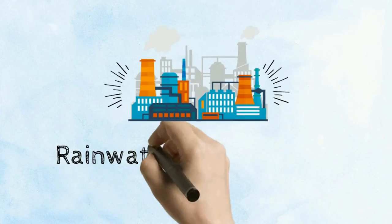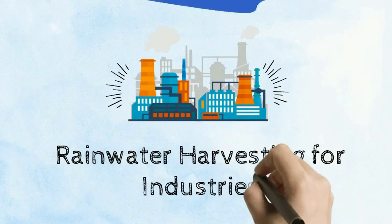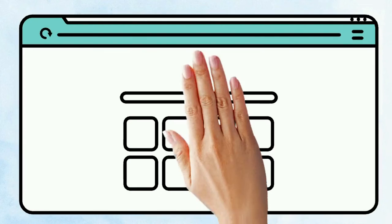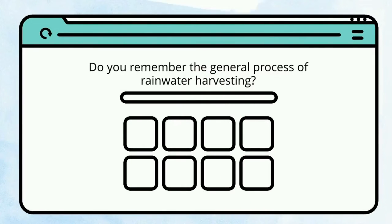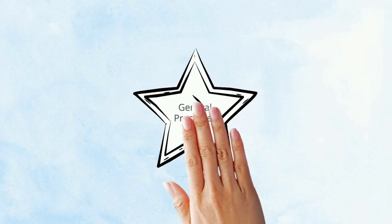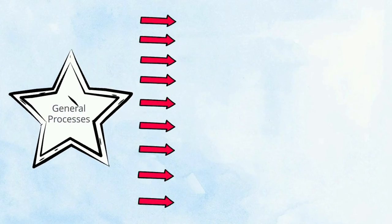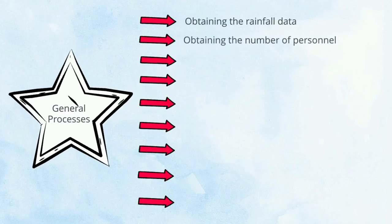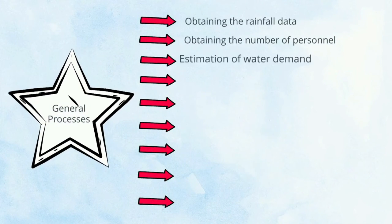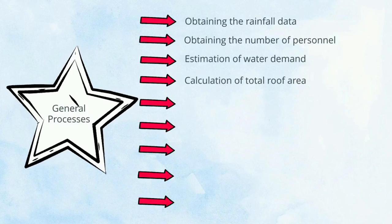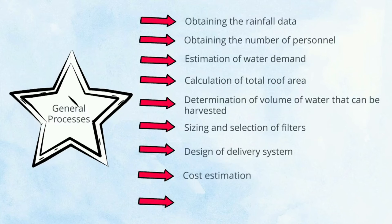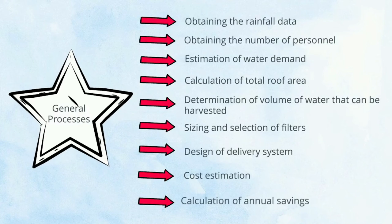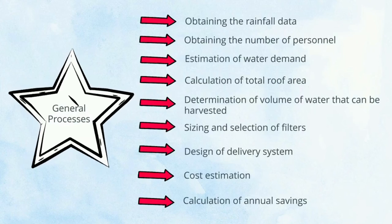Rainwater harvesting for industries. There are 9 general processes involved: obtaining rainfall data, obtaining number of personnel, estimation of water demand, calculation of total roof area, determine volume of water that can be harvested, sizing and filter selection, design delivery system, cost estimation, and annual saving calculation.